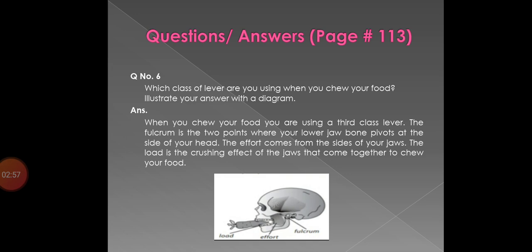Question number 6. Which class of lever are you using when you chew your food? Illustrate your answer with a diagram. Answer: when you chew your food, you are using a third class lever. The fulcrum is the two points where your lower jawbone pivots at the side of your head. The effort comes from the sides of your jaws. The load is the crushing effect of the jaws that come together to chew your food. Here is the diagram showing the fulcrum, effort, and load. Please try to draw the diagram as well.